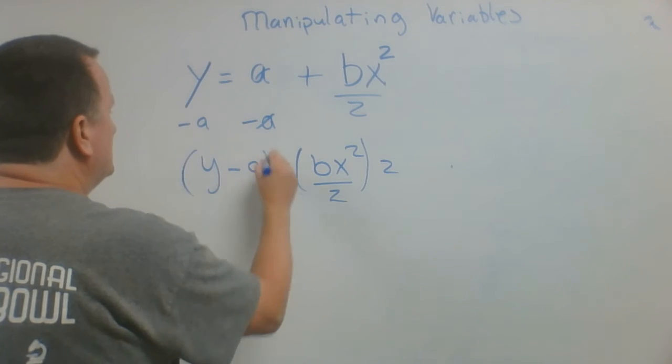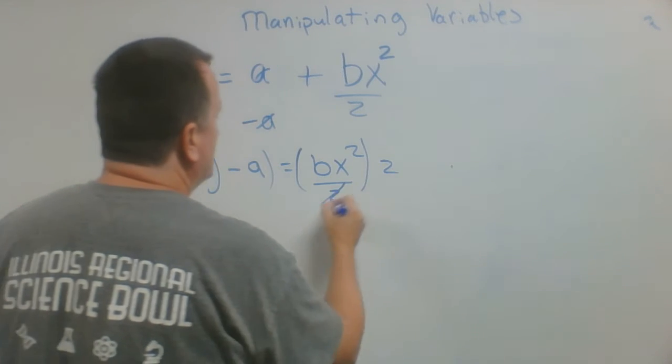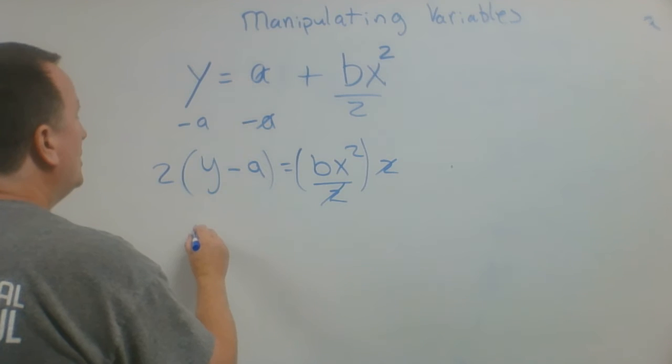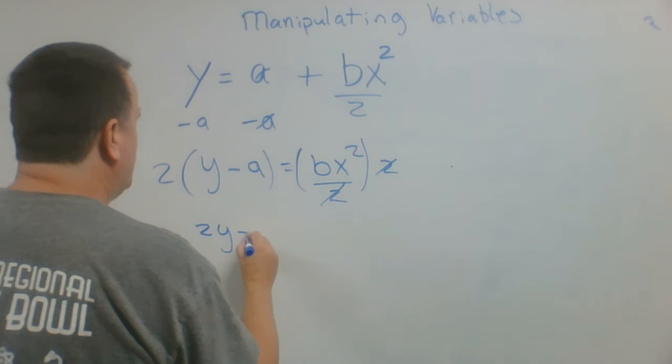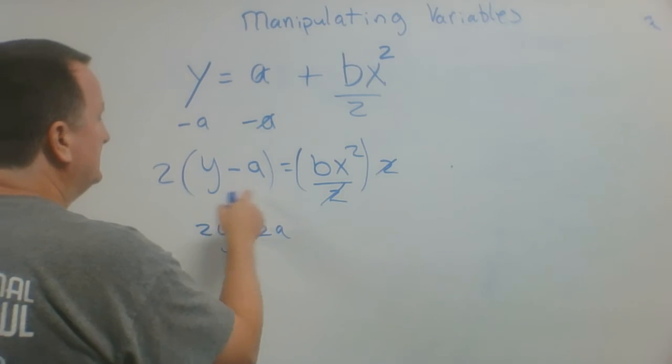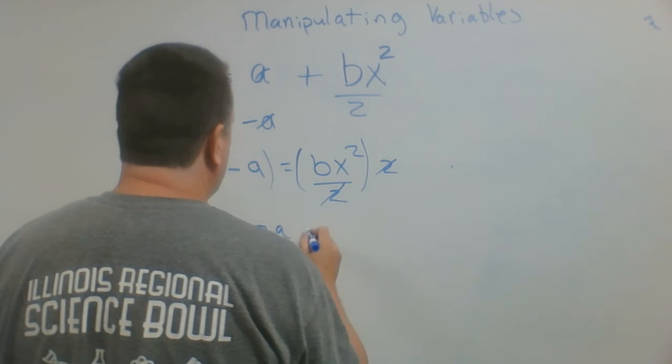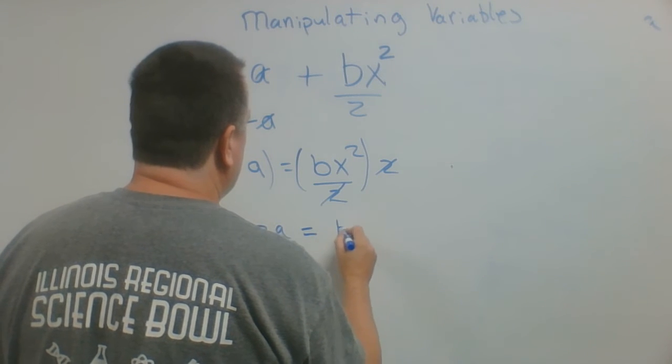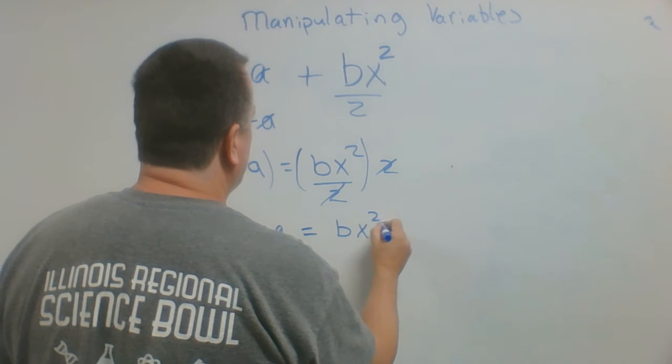So I'm going to multiply this by 2, and the 2's go away, and I end up with 2y minus 2a. I'm distributing the 2 through here, and I end up with equals bx squared.